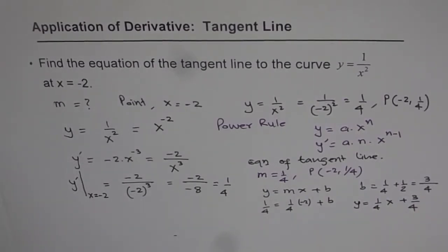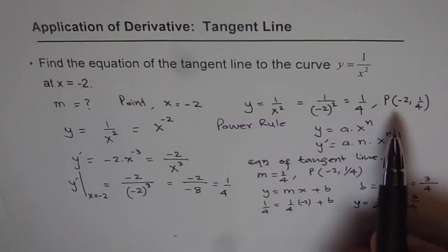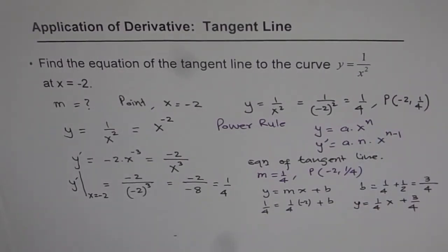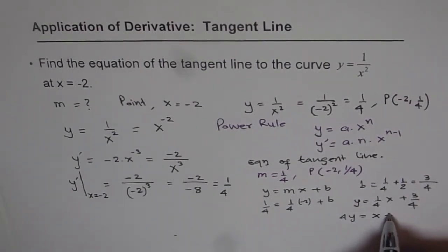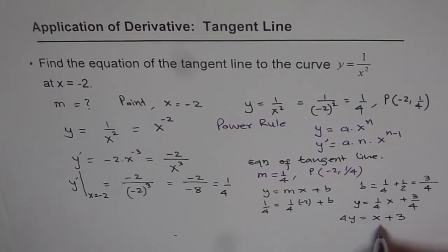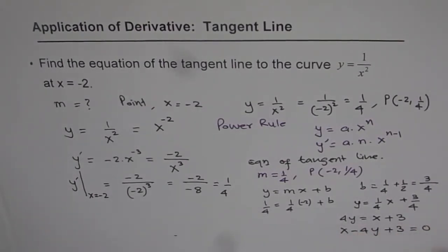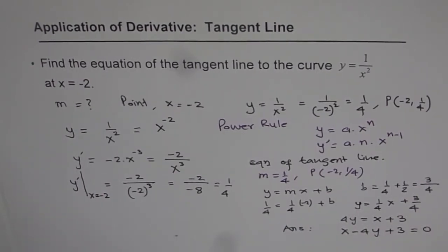That is the equation of the tangent line to the curve y equals 1 over x squared at x equals minus 2. We can also rewrite this in standard form: multiplying through by 4 gives 4y equals x plus 3, which rearranges to x minus 4y plus 3 equals 0. So that is our final answer.